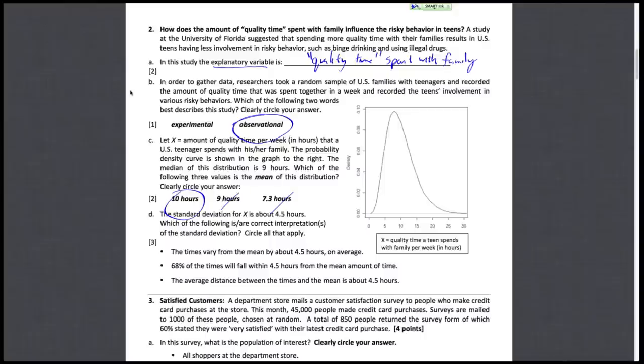And lastly, we have the standard deviation for x being about 4.5 hours. And then we have to figure out which of the following are valid interpretations of the standard deviation. So the first one, the times vary from the mean by about 4.5 hours on average. So we have distance from the mean, we specify that distance, and we say that that's on average. It can change from one data point to the other. So this one's good.